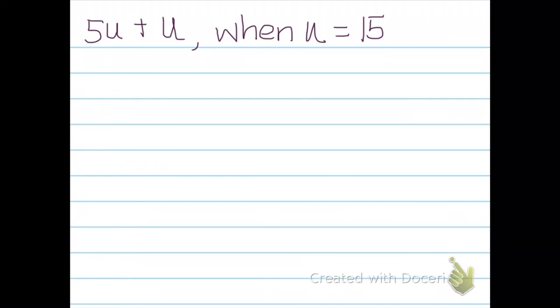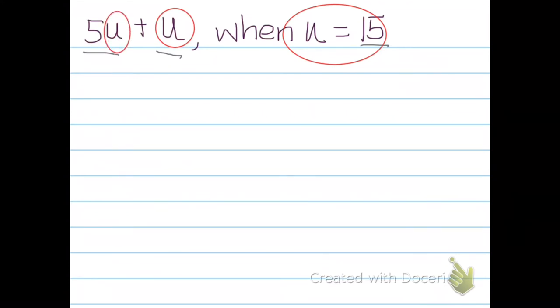I've changed it up for you here. We see that we're going to be adding 5u plus u when u is 15. All that means is that we're going to have to plug 15 in twice where we see u in the problem. We see it here and we see it here. So 5 times u, that's the same as saying 5 times 15 plus 15.